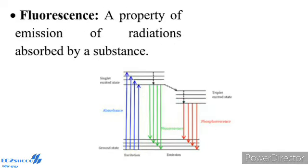Fluorescence: A property of emission of radiation absorbed by a substance. Fluorescence is the property of some substances to emit back the absorbed radiation in the form of long-wave radiation. All photosynthetic pigments have the property of fluorescence. However, most of the fluorescence emitted by photosynthetic pigments is due to chlorophyll A, because the other pigments usually hand over their absorbed energy to it through resonance.